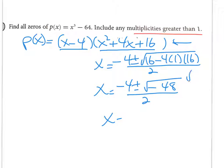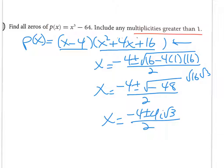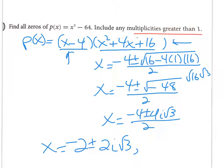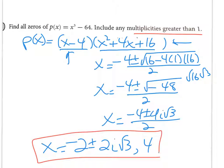You can break down 48 as 16 × 3, and since it's negative inside the radical, we get an i. So it becomes (−b ± √(16·3)·i) / 2, which is (−b ± 4i√3) / 2. Reducing by dividing numerator and denominator by 2 gives negative 2 ± 2i√3. Don't forget your other zero from the (x − 4) factor: that's just 4. So there are three zeros.